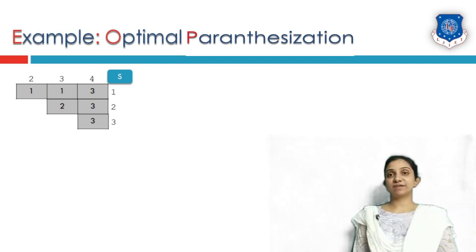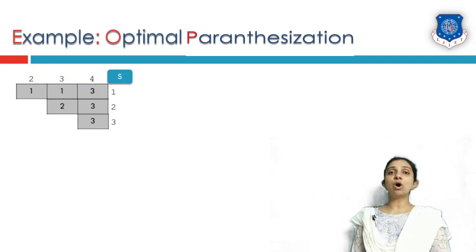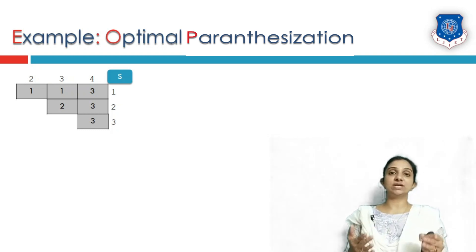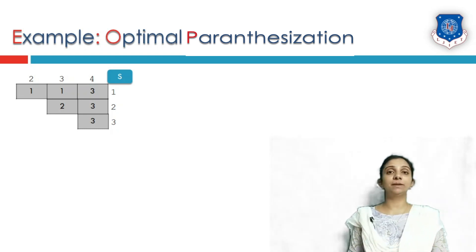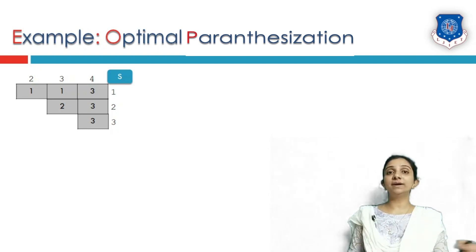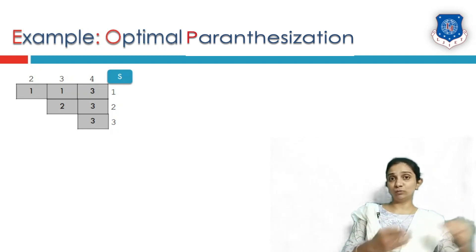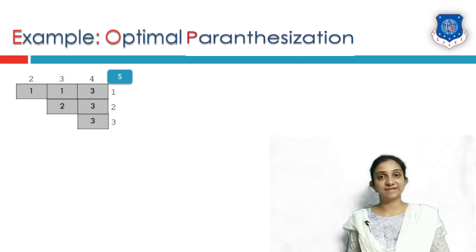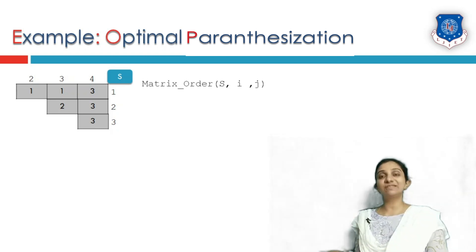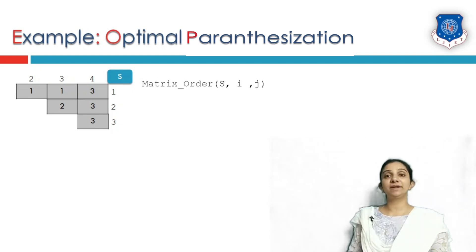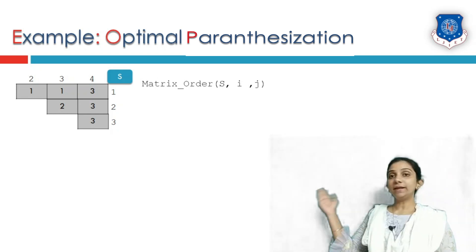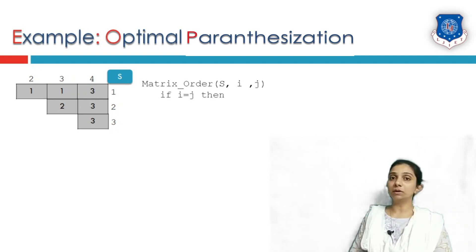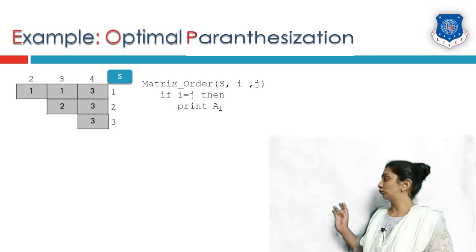Now we will see optimal parenthesization. Parenthesization is nothing but the order in which we have to multiply. From our previous data we only know how many scalar multiplications there will be — there will be 158 multiplications. But what about the order in which we have to multiply? Do we multiply A1 and A2 first, or A2 with A3, or A3 with A4? For that purpose we will make use of the s table. The matrix order algorithm takes table s, row i, and column j. It first checks whether row number equals column number; if so, we print A[i].